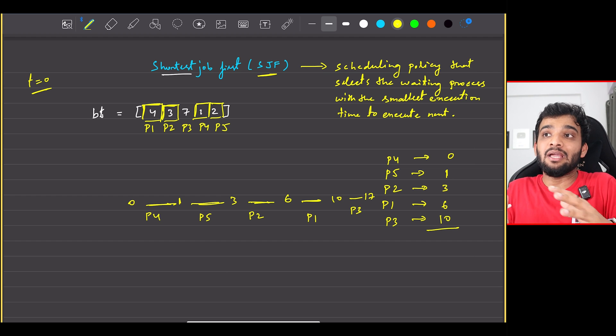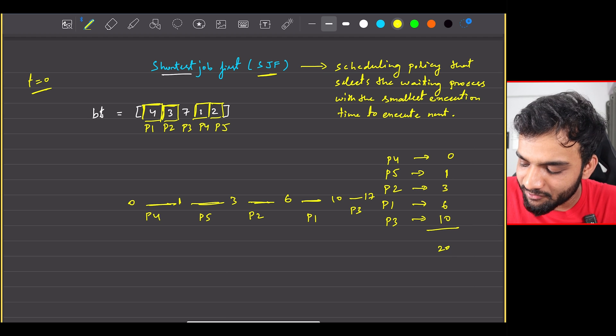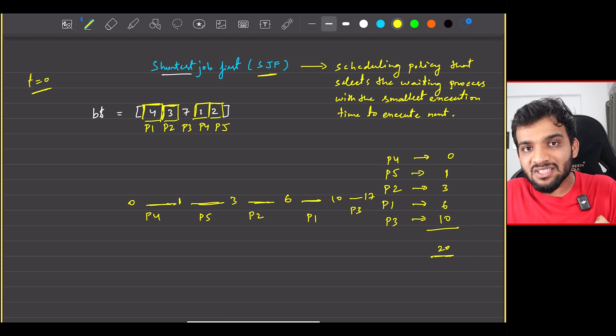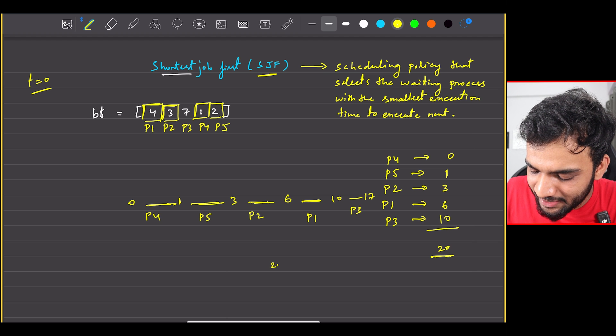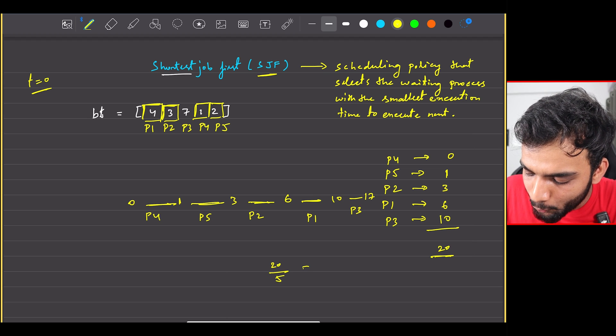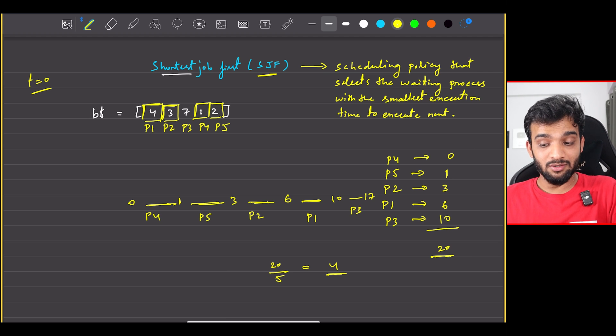Everyone's waiting time is known to me, so what I can do is I can sum up the waiting time because I need the average waiting time for all the processes. So if I sum it up, the total waiting time will be 20. How many processes did we have? N equal to 5. So the average will be 20 by 5, that's 4. This is what you'll have to return. If it was 4.2, you still return 4. If it is 4.7, you still return 4. The nearest smallest integer is what you return for the average.